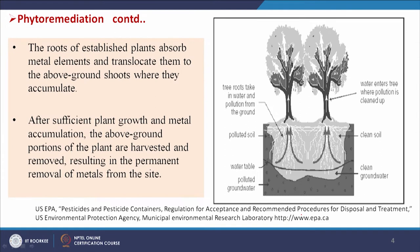Looking at this figure, pollutants may be present in the water or soil, and they will come through the roots into the plant, moving towards the stem and leaves. Depending upon the nature of the pollutants, they may be translocated to shoots or transmitted to leaves, depending on the nature of the plant and the nature of the pollutants.